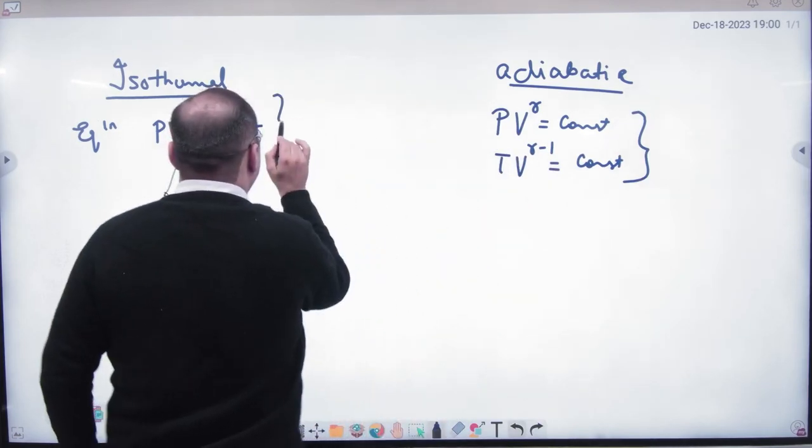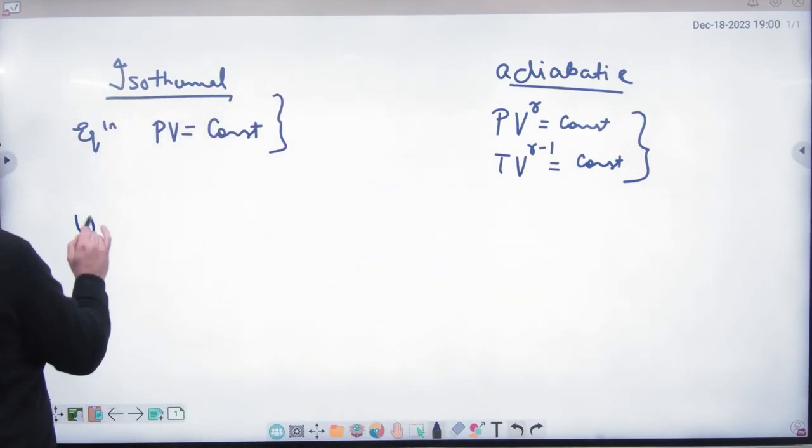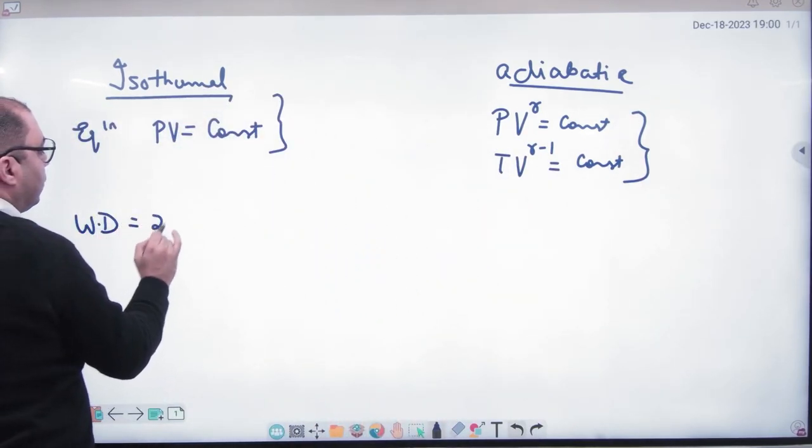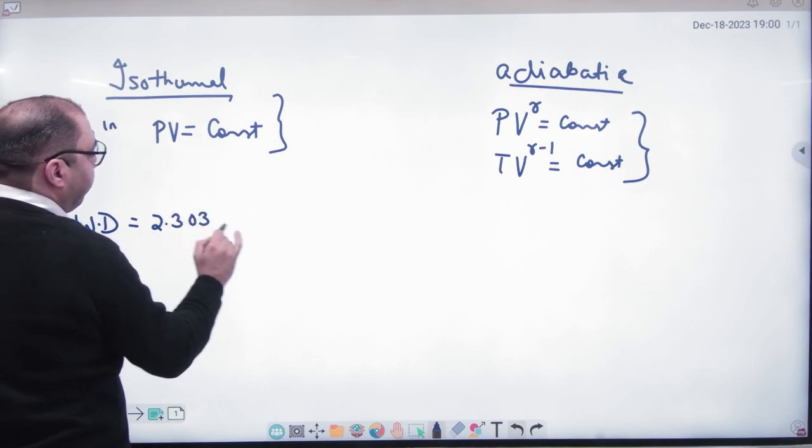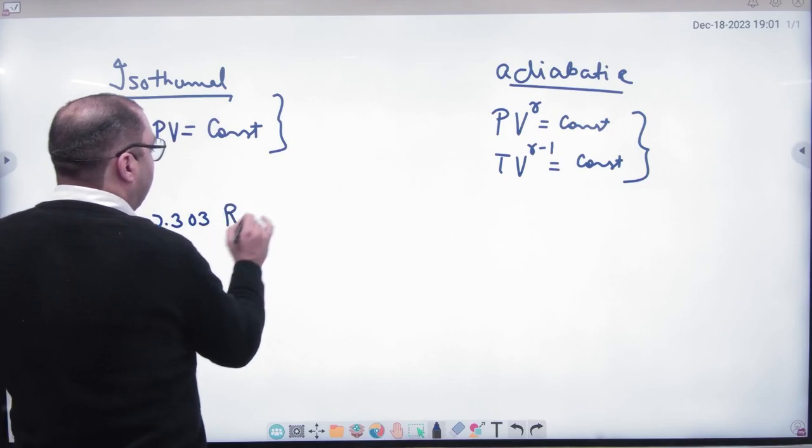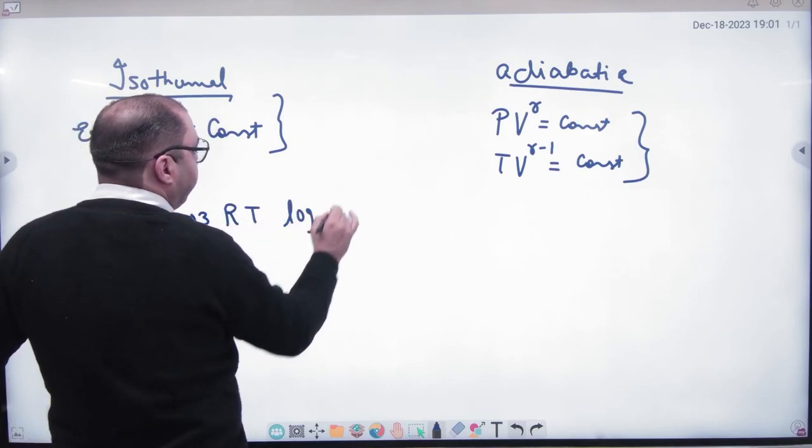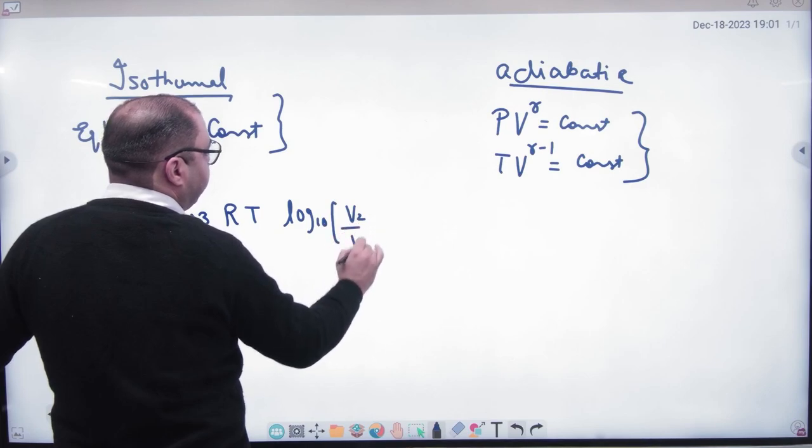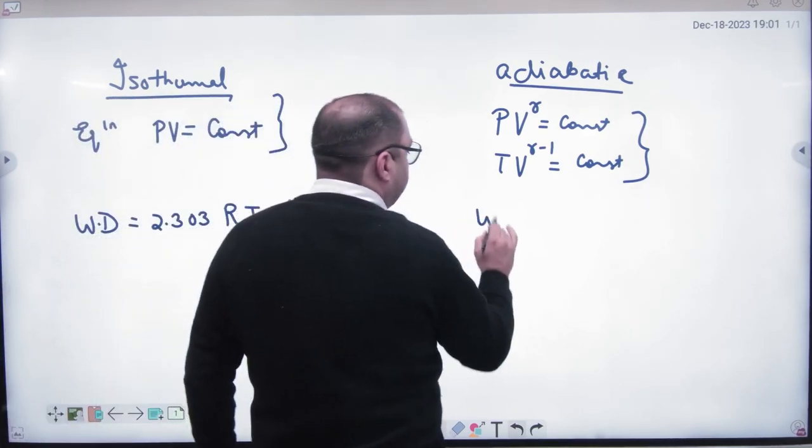Next is work done. The value: 2.303 RT log of V2 divided by V1 for 1 mole. This is the work done formula.